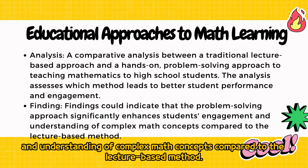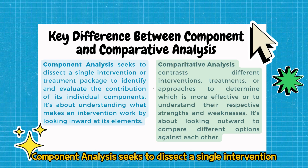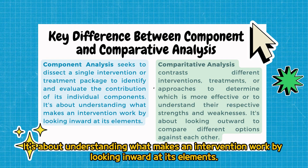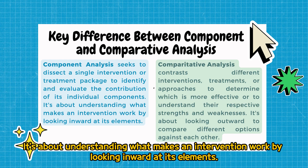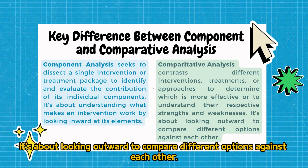Key Difference Between Component and Comparative Analysis: Component analysis seeks to dissect a single intervention or treatment package to identify and evaluate the contribution of its individual components — it's about understanding what makes an intervention work by looking inward at its elements. On the other hand, comparative analysis contrasts different interventions, treatments, or approaches to determine which is more effective or to understand their respective strengths and weaknesses — it's about looking outward to compare different options against each other.